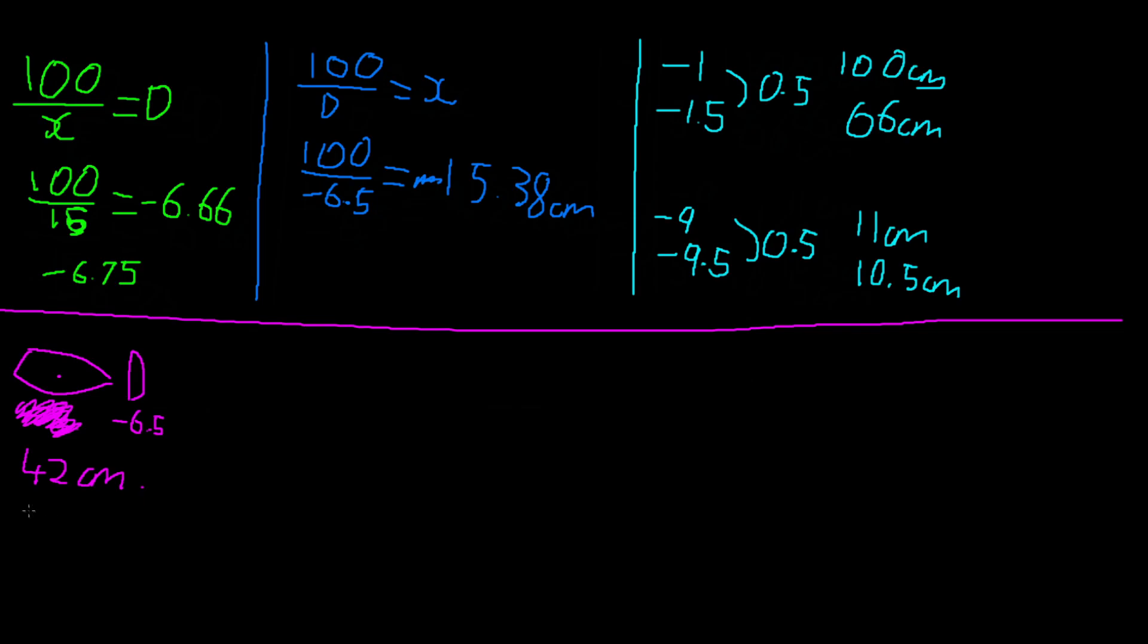So we would do 100 over 42 and we're going to add on a sign just like we said to do earlier. So we just add on the sign. That's going to be minus 2.38. Now you're wearing minus 6.5 lenses. So all we're going to do is add these numbers together. So minus 2.38 and we add minus 6.5.